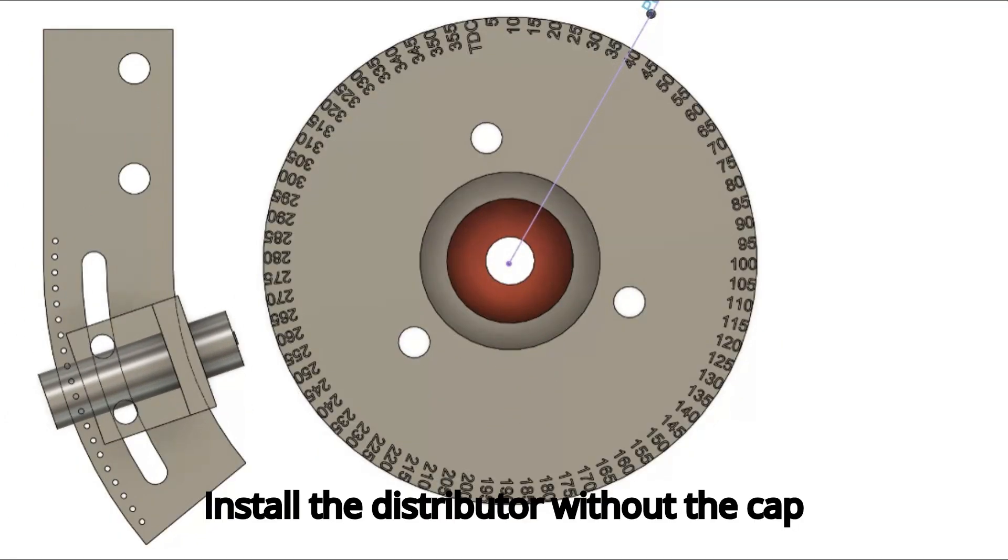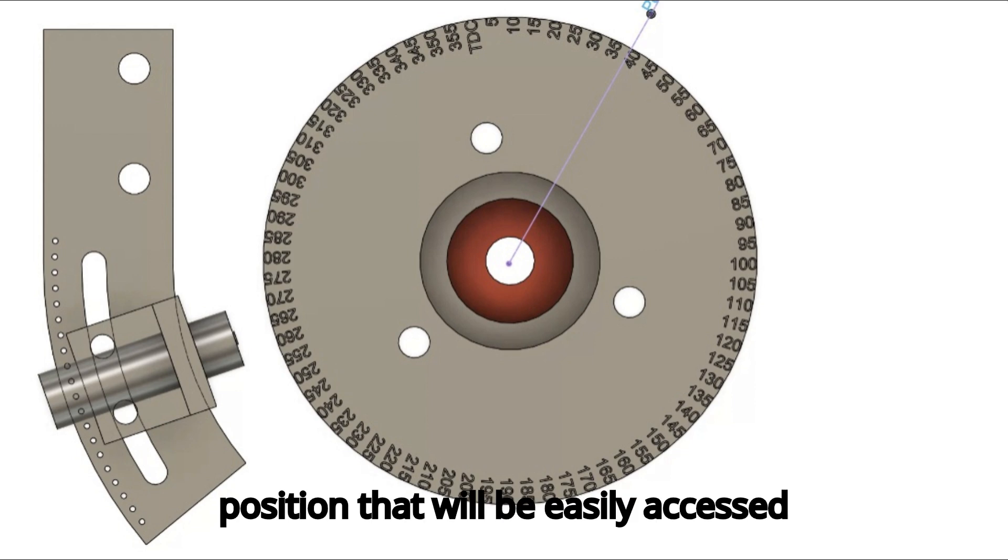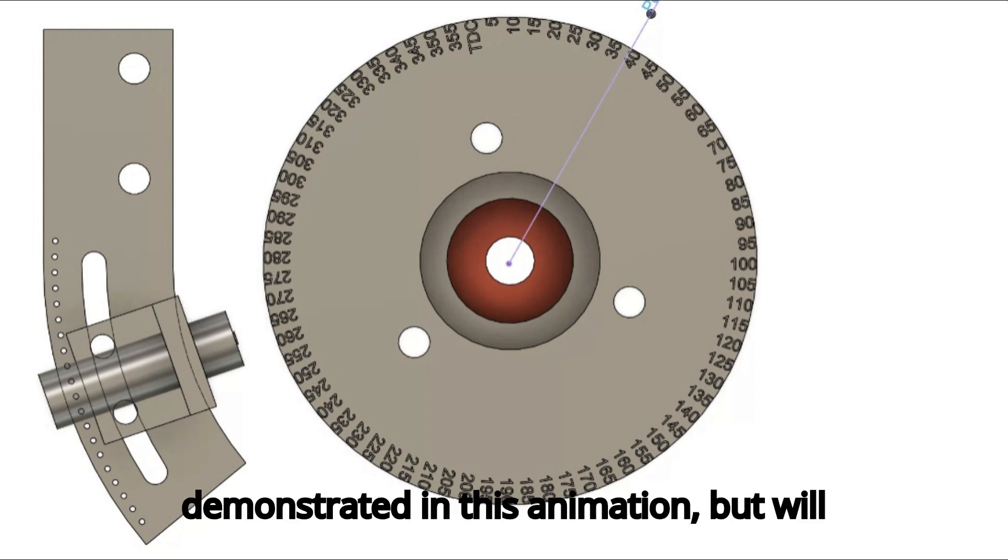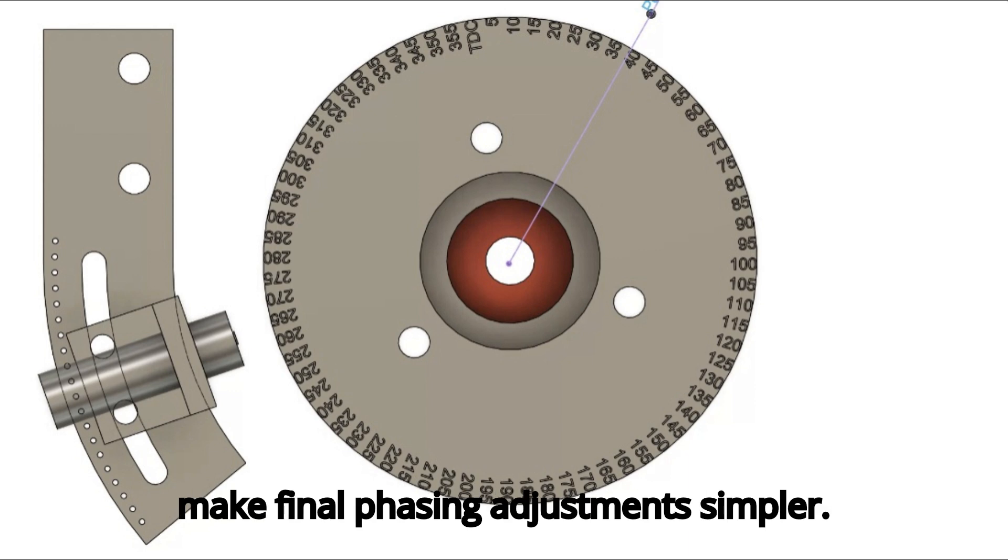Install the distributor without the cap in the engine while the rotor tip is in a position that will be easily accessed with a timing light later when the cap and wires are installed. This initial rotor phasing is not demonstrated in this animation, but will make final phasing adjustments simpler.